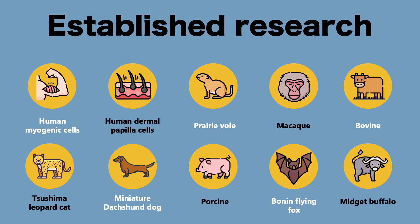Currently, our laboratory has published several papers regarding this K4DT method of immortalization. We have established several types of immortalized cell lines, such as human myogenic cells, human dermal papilla cells, pre-adipose cells, macaque cells, bovine cells, the Tsushima leopard cat cells, miniature dachshund dog cells, porcine cells, the Bonin white-eye fox cells, and the cells of the music buffalo.